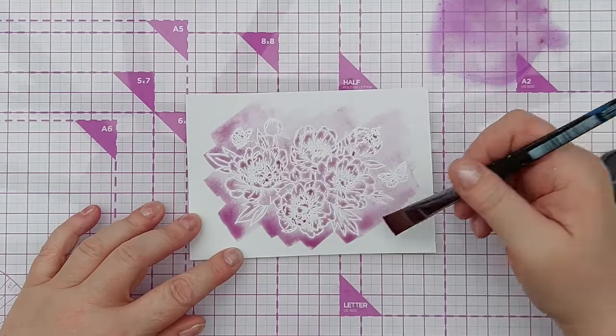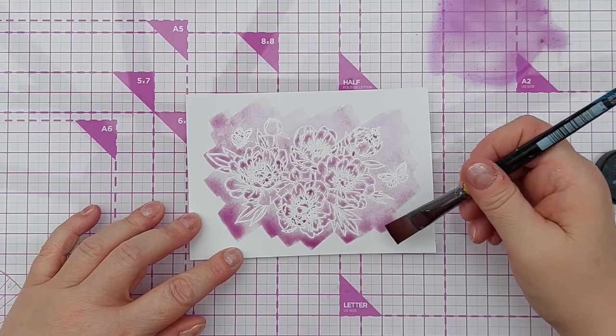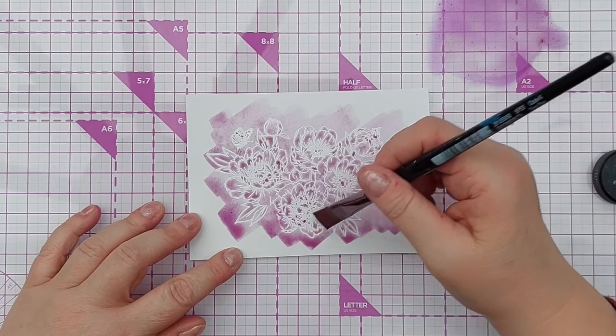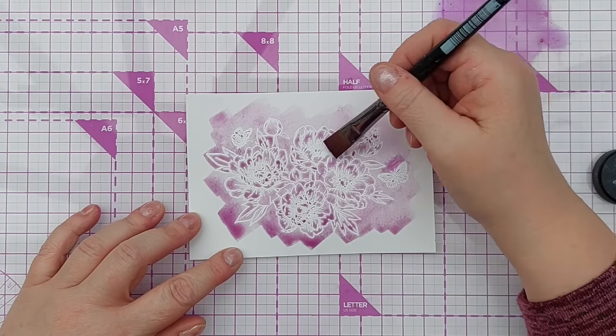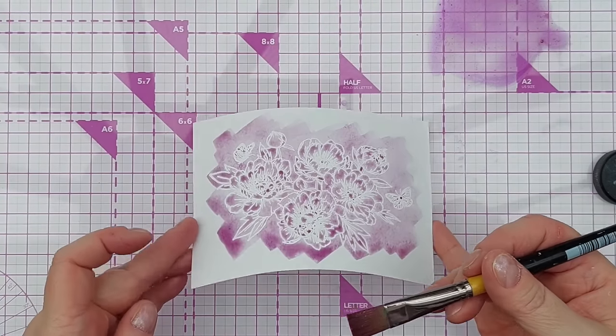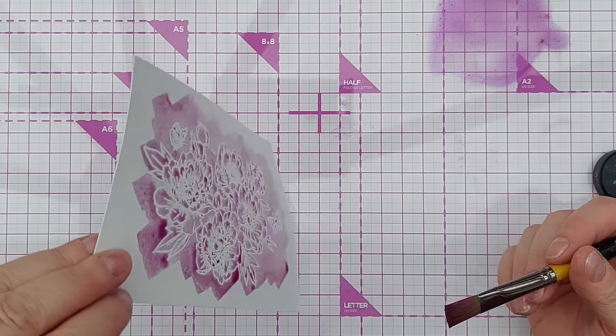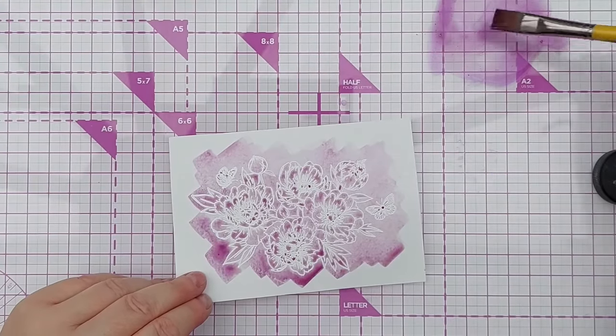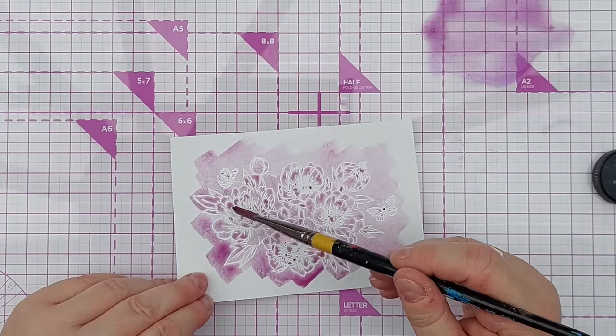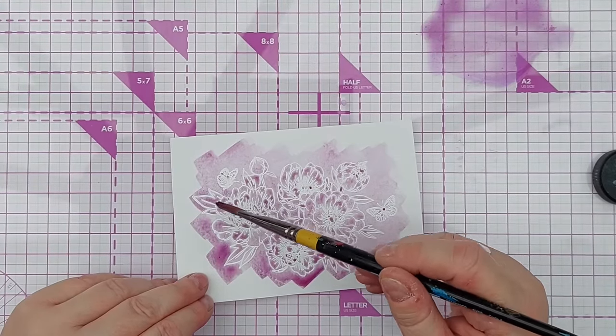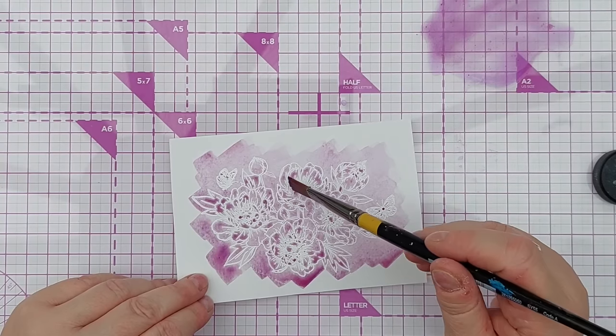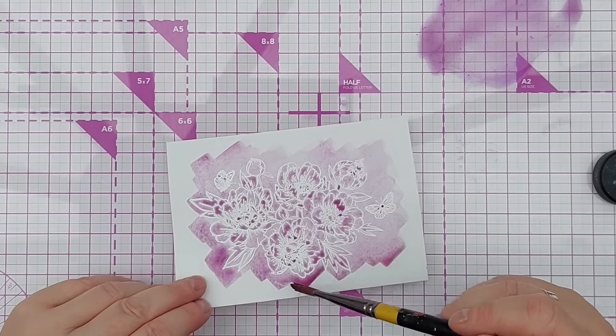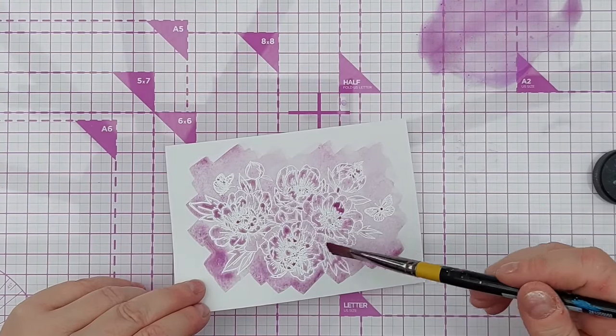And that has brought out that image really nicely. And when that dries, that magenta color is going to be beautifully shimmery. Just let it run. And you can, if you want to intensify the color in some areas, you can always drop a bit more liquid, a bit more paint in some areas, for example the center of the flowers.